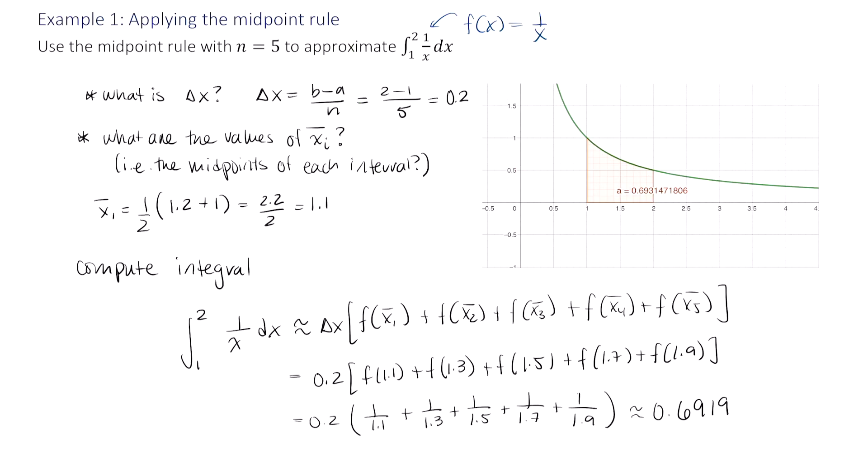So our approximation using Riemann sums with n equals 5 rectangles and the midpoint rule is pretty good. Hope this video helps.